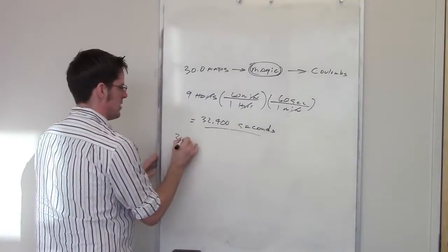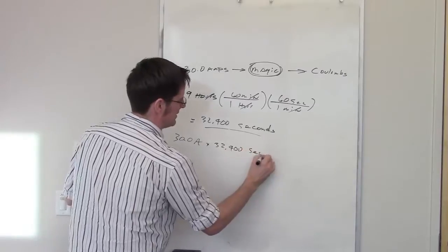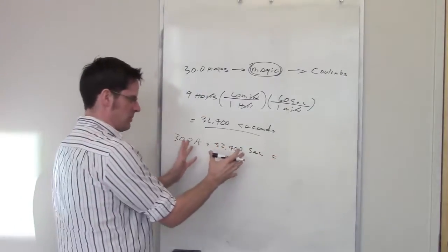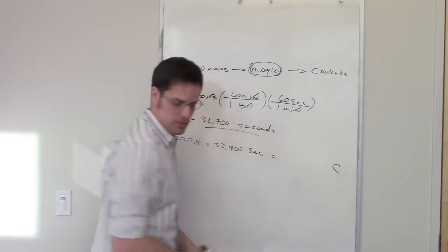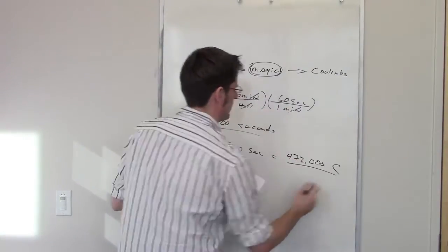So I can take, once again, 30 amps. I can multiply that by my 32,400 seconds, and throw that in a magic box, voila, it comes out Coulombs. That final number ends up being 972,000 Coulombs.